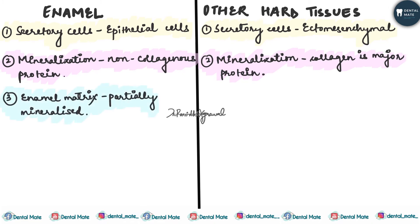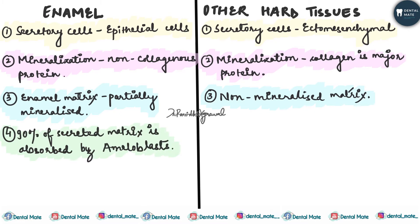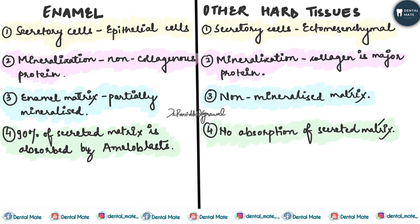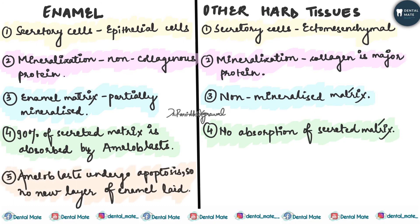The enamel matrix is partially mineralized, whereas there is a non-mineralized matrix in other hard tissues. The 90% of the secreted matrix is reabsorbed by the ameloblast during the process of mineralization, whereas in other hard tissues there is no absorption of the secreted matrix.